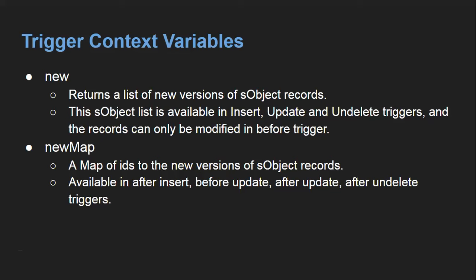Next is Trigger.new — it returns a list of new versions of SObject records. This list is available in insert, update, and undelete triggers, and records can only be modified in a before trigger. When inserting or updating, Trigger.new will contain the new version of the records, and Trigger.new can be modified only in a before trigger.